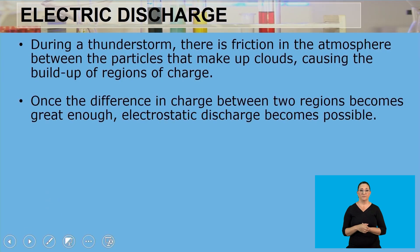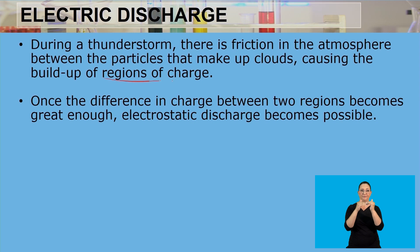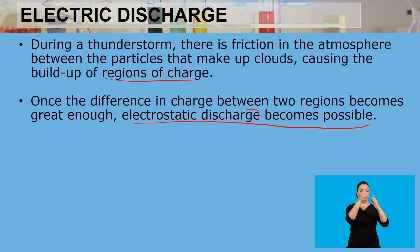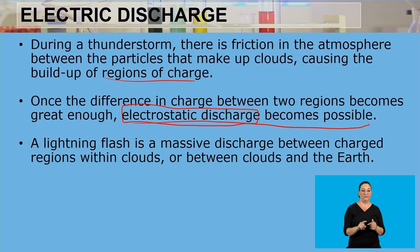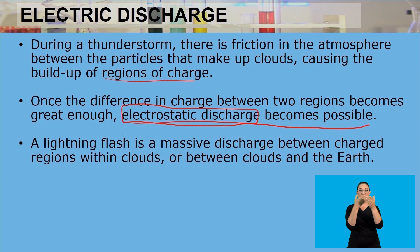During a thunderstorm, there is friction in the atmosphere between the particles that make up clouds, causing a buildup of regions of charge. Once the difference in charge between two regions becomes great enough, electrostatic discharge becomes possible. If it happens fast, we call it lightning. A lightning flash is a massive discharge between charge regions within clouds or between clouds and the earth.